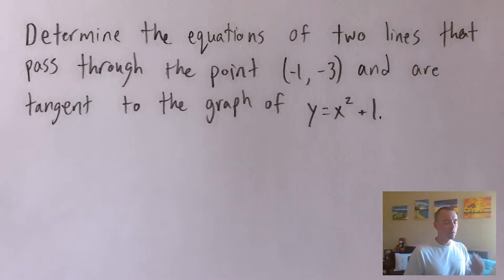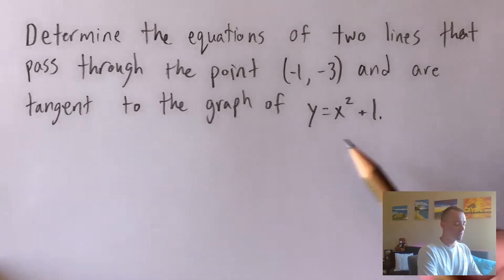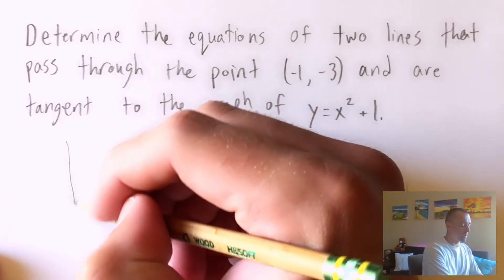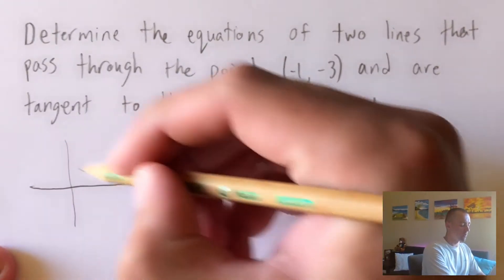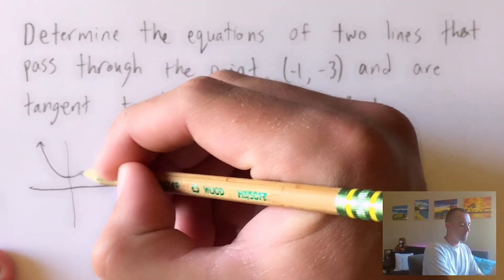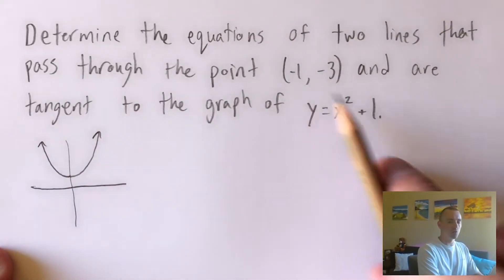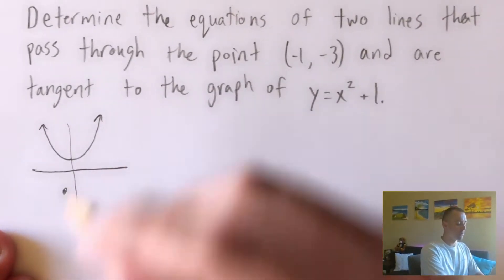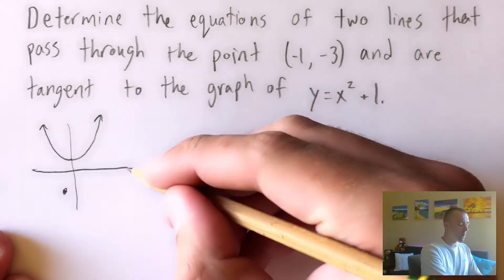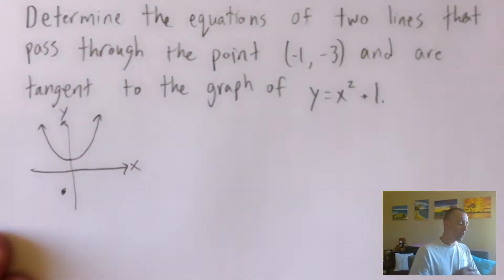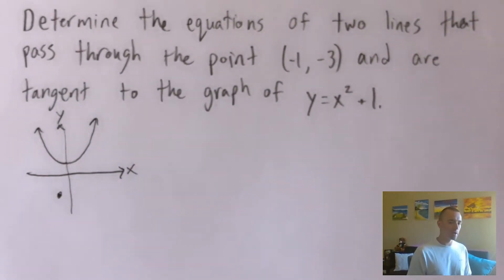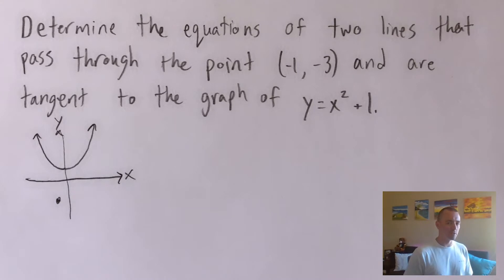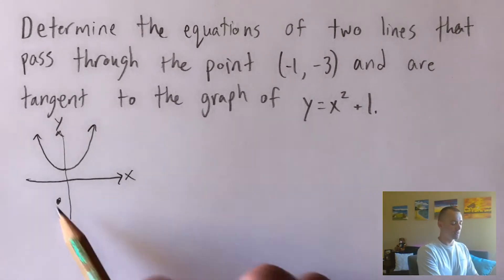Let me show why this is such a weird problem by graphing this function and this point. We have y equals x squared plus one, which is just a parabola with its vertex at the point zero, one. And then the point negative one, negative three is going to be somewhere down below. The reason why this is such a weird problem is because the point they gave us that the tangent line has to pass through doesn't even lie on the function. Normally with these problems they give you a point that lies on the function, but this is going to be a completely different process.